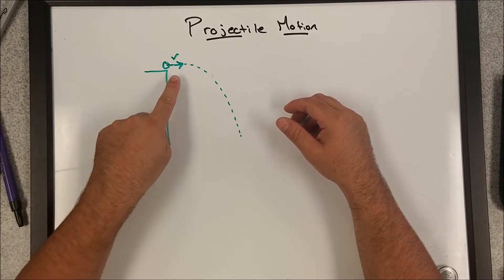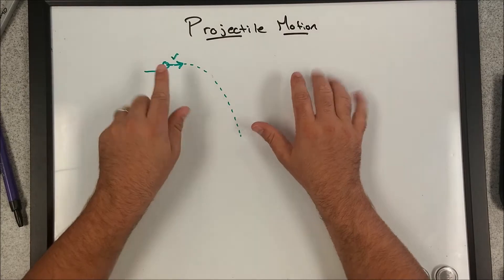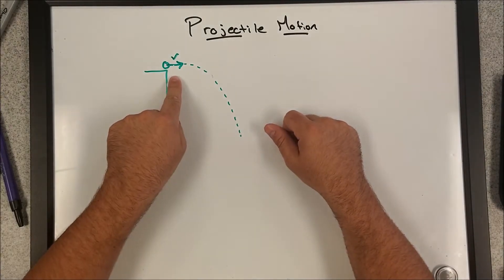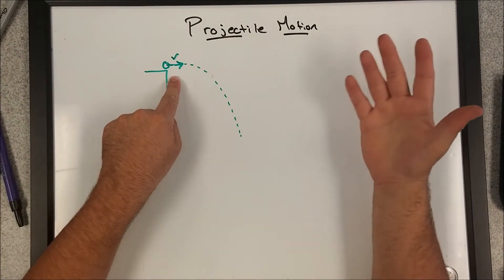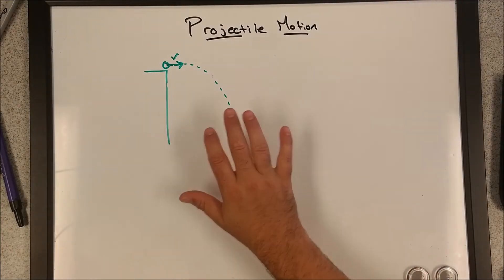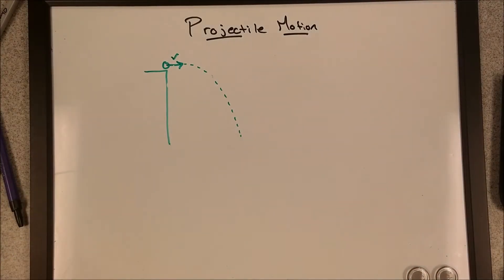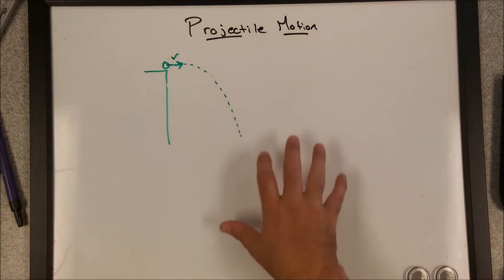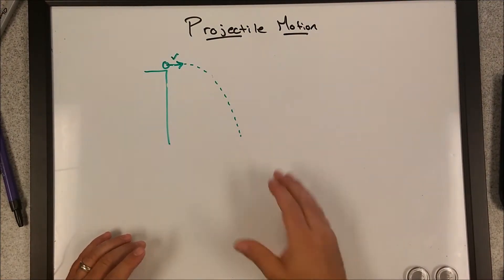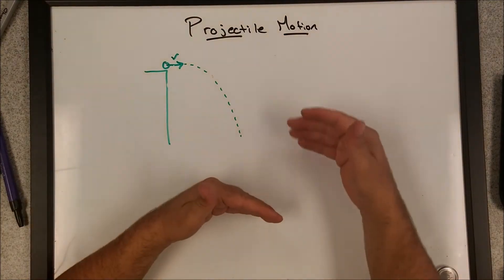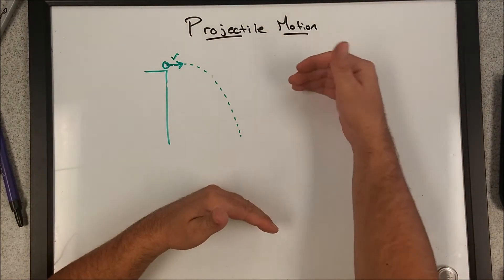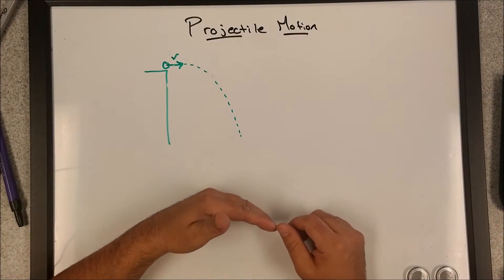Second, your horizontal component will never change. So if I know my horizontal component right from the start is two meters per second as an example, then it's going to stay two meters per second the whole way across while it's moving. The only velocity that will truly be changing is the vertical, because acceleration due to gravity is pulling it down — slowing it down as it's traveling up and increasing speed as it travels back down.